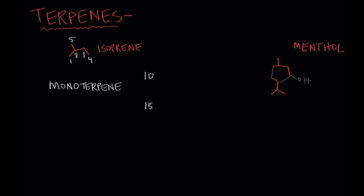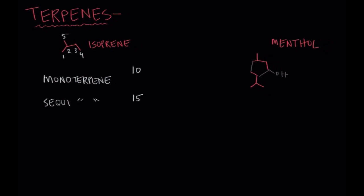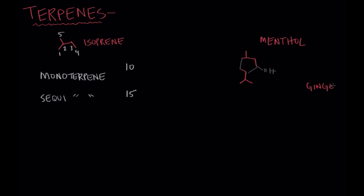If you add one more isoprene, you'd have 15 carbons, and that would give you three units of isoprene, and we'd call it a sesquiterpene. One example of a sesquiterpene is ginger, and ginger looks like this. You can see that ginger is made up of three isoprene units, and it fills up ginger snap cookies, and those are my favorite types of cookies. You can just keep adding these isoprene units and making larger and larger molecules. So I'll just go ahead and make a chart here.